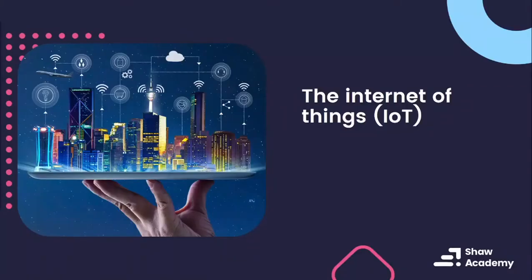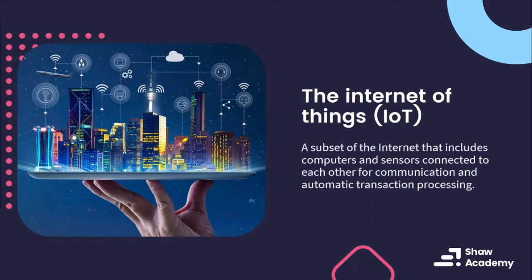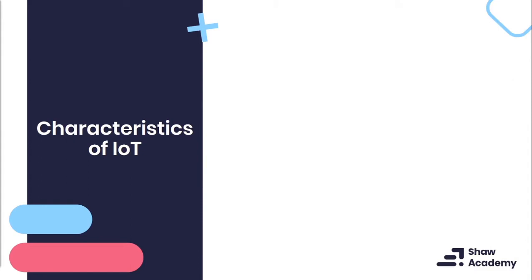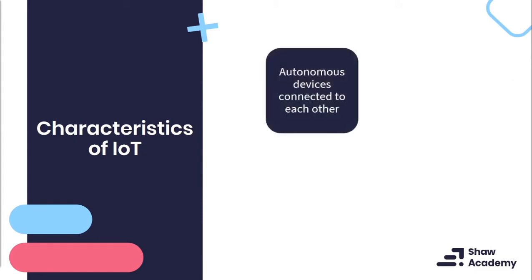Another modern technology resulting from the internet is the Internet of Things. Essentially the Internet of Things is a subset of the internet that includes computers, sensors, and devices that are able to communicate with one another without the need for human intervention. One of the most powerful things behind IoT is the fact that it results in automation. IoT includes autonomous devices that connect to one another without human intervention, and it is quite software driven.